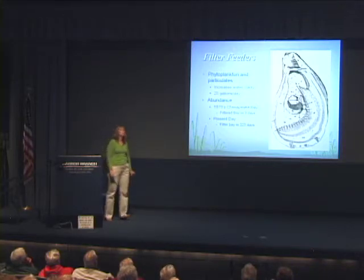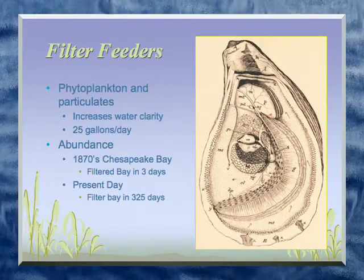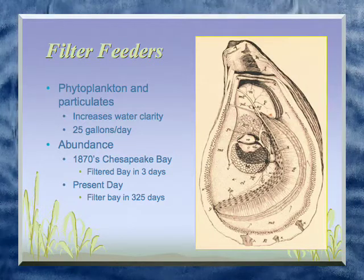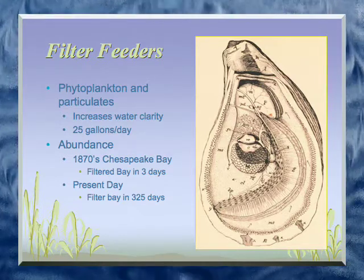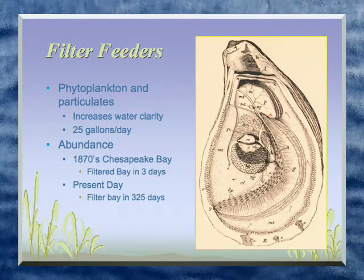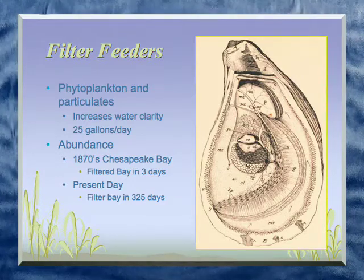Another thing that oysters do is clean the water. They eat the plankton and the particles in the water. Depending on the size and species, the average is that they filter 25 gallons a day — that's a lot of water. As they filter, they get food themselves. Water comes in, goes over the gills, is taken in through the intestines, and then makes its way out again. At one time, there were so many oysters in Chesapeake Bay that it's estimated they could filter the water within three days. Nowadays, it takes almost a year. We need more oysters there.